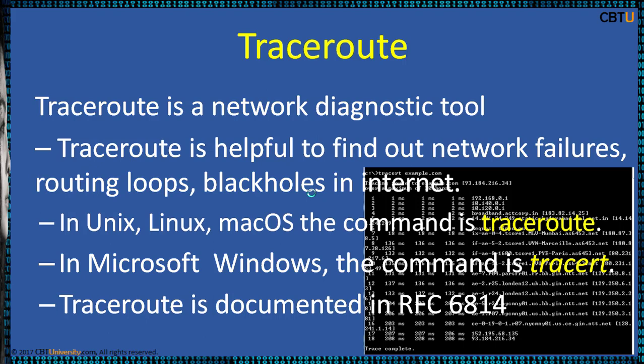In Unix, Linux, and Mac OS the command is traceroute, and in Microsoft Windows the command is tracert. This tool displays the path and measures the transit delays of packets across hops in the network. The history of the route is recorded as the round-trip times of three packets received from each successive hop. The sum of the mean times at each hop measures the total time to establish the connection. Traceroute proceeds unless all three packets are lost more than twice, then the connection is lost and the route cannot be evaluated. Ping, on the other hand, only computes the final round-trip time RTT from the destination point.